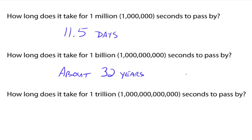And the last one. About how long does it take for a trillion seconds to pass by? That's one followed by 12 zeros. Well, about 32,000 years.